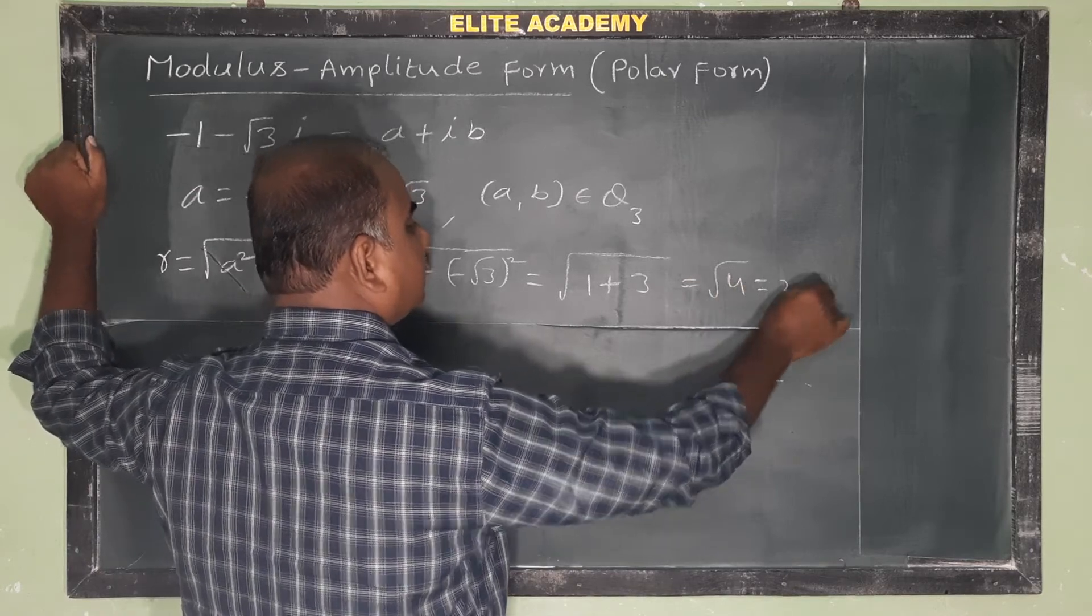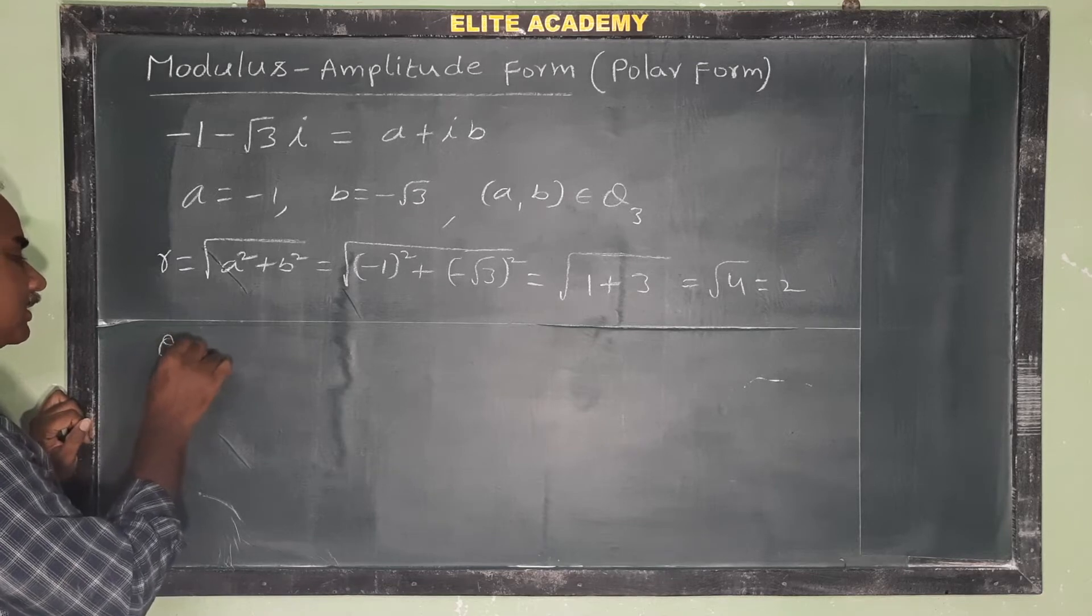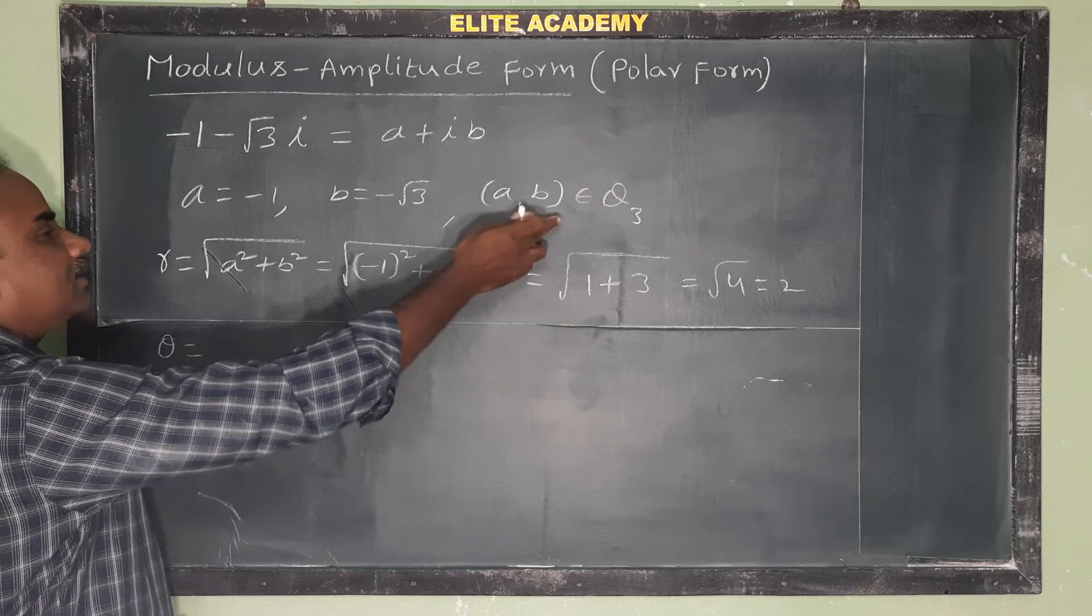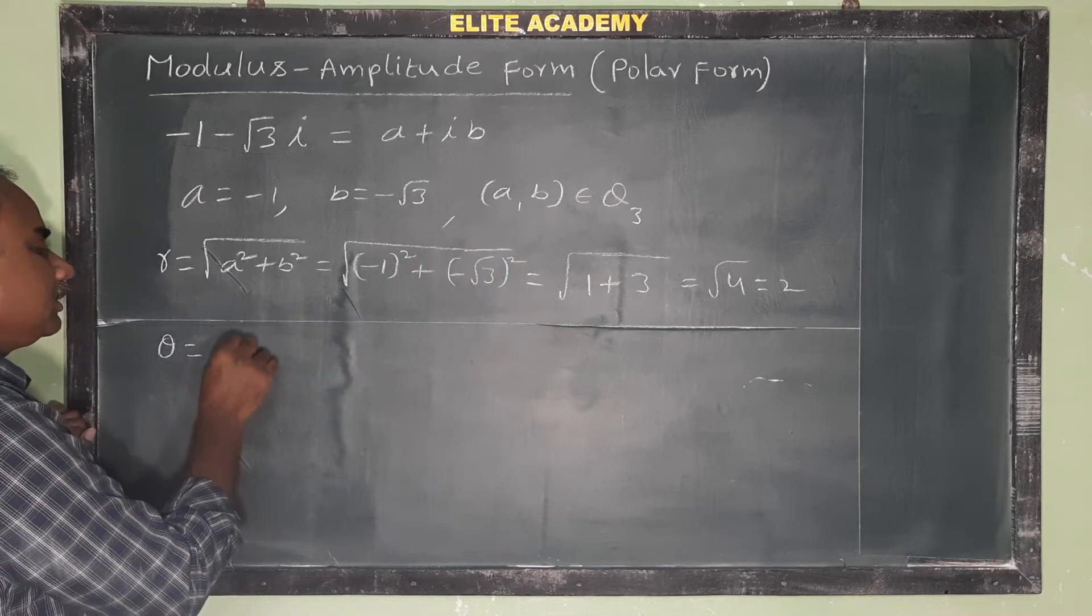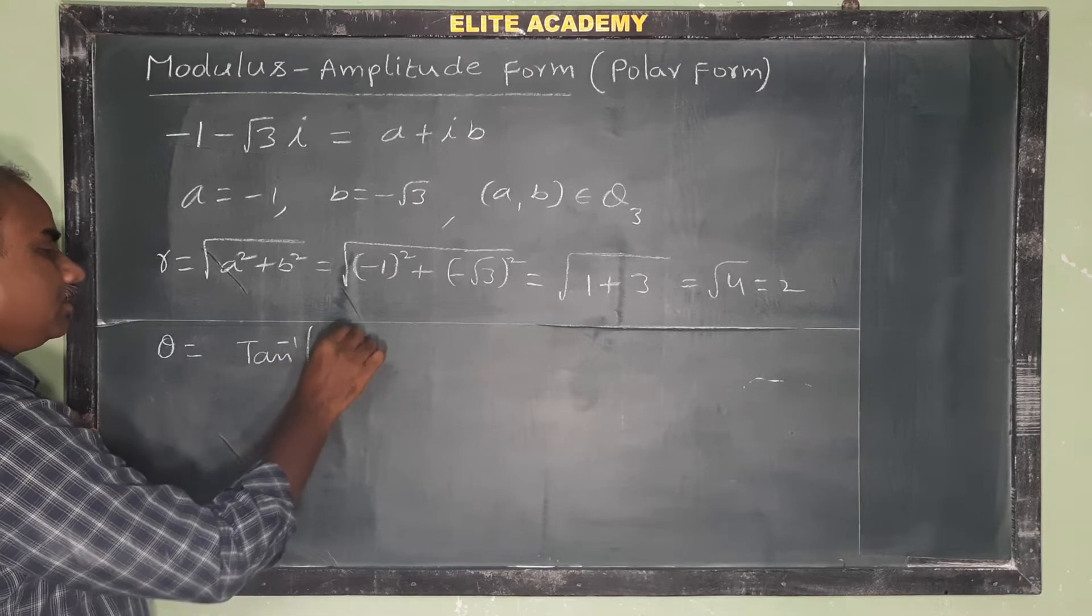So r = 2. Next, theta, that means amplitude. The formula when the point lies in the third quadrant is tan⁻¹(|b/a|) - π.